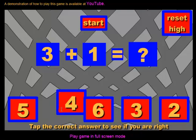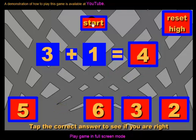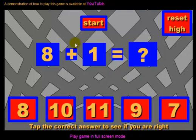So 3 plus 1 is 4. 8 plus 1 is 9 so we can have a look for 9 at the bottom.